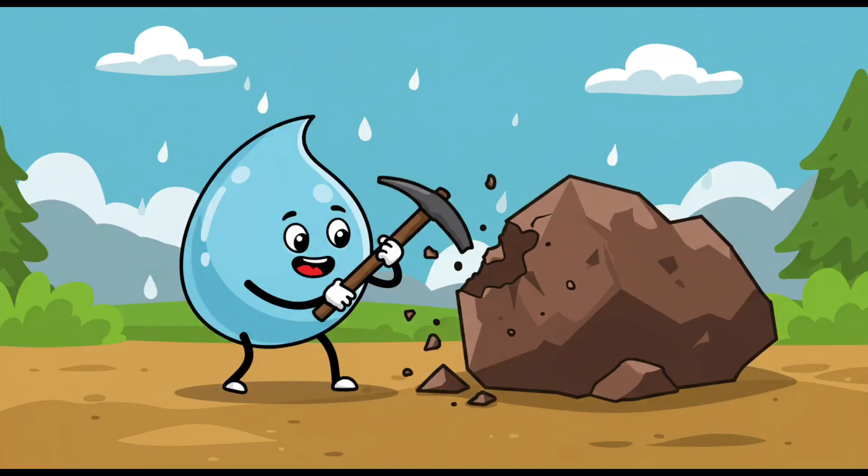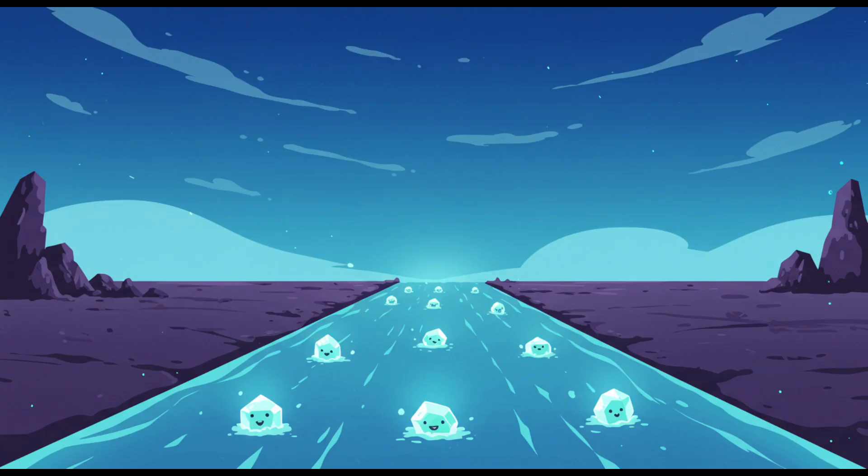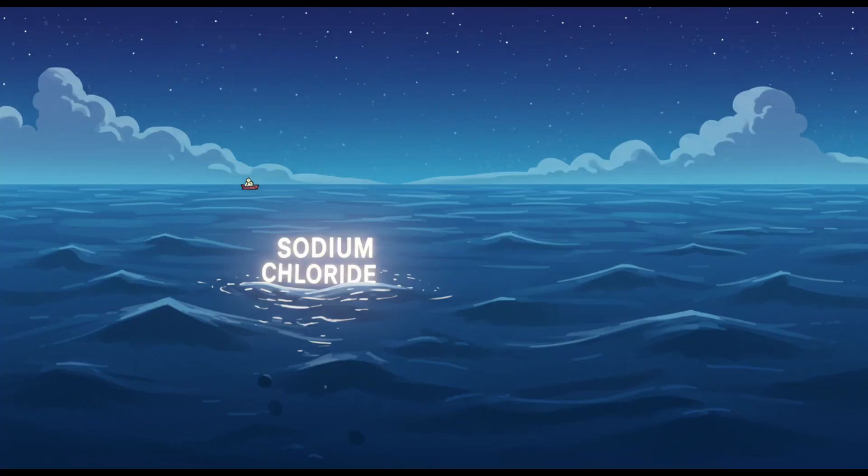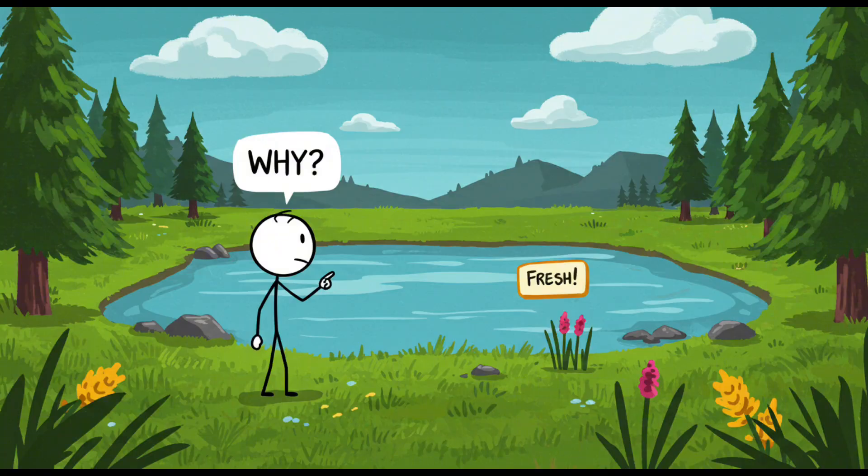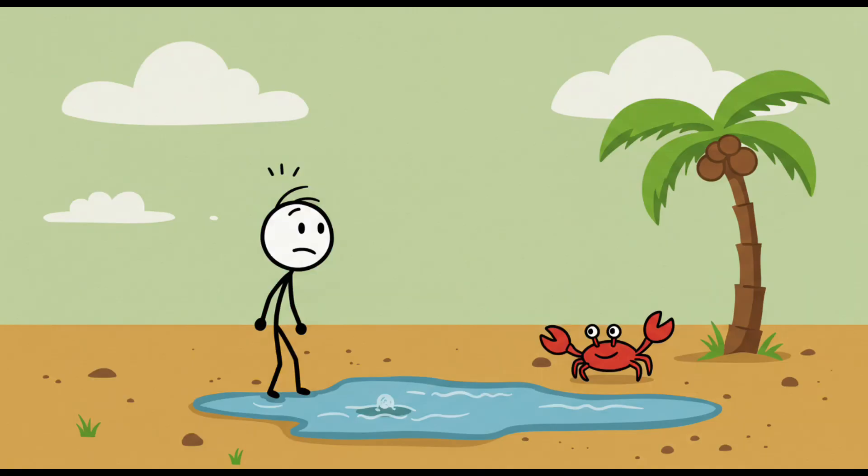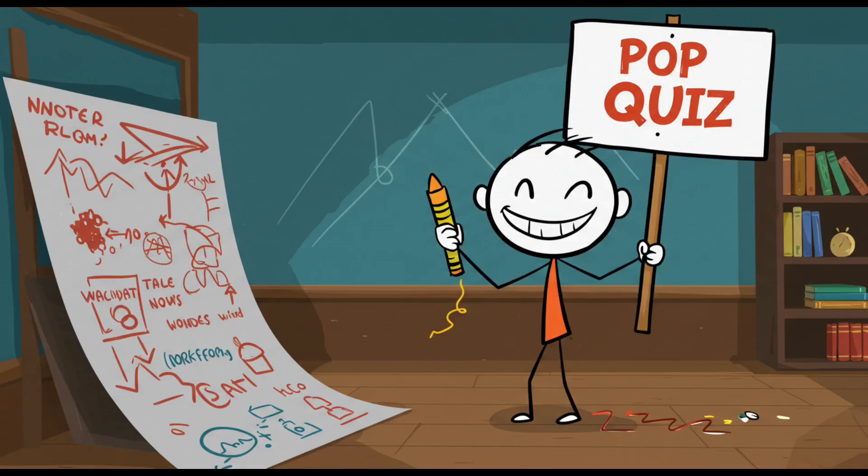The basic explanation sounds simple. Rainwater erodes rocks on land, the rivers carry dissolved minerals to the sea, and over millions of years, those minerals, mainly sodium and chloride, build up to make seawater salty. Boom. Nailed it. Except, if that's the whole story, then why aren't lakes equally salty? Why do some lakes stay fresh? Why isn't every puddle on the planet a mini saltwater lagoon? Suddenly you realize you've been tricked into a geology pop quiz by someone who still thinks crayons are a food group.